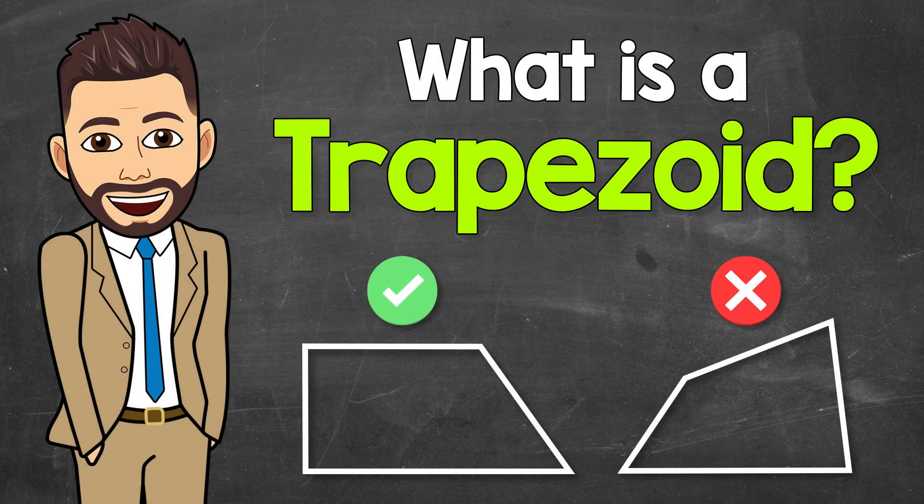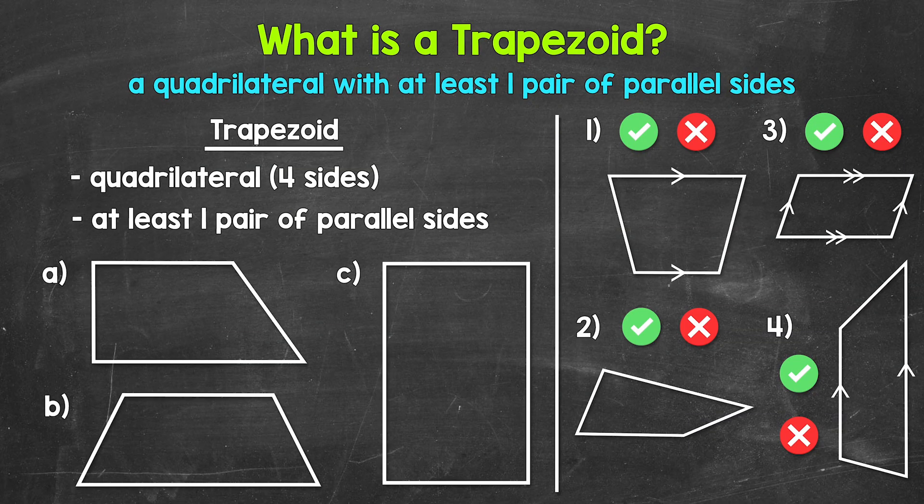Welcome to Math with Mr. J. In this video, I'm going to cover what a trapezoid is. Simply put, a trapezoid is a quadrilateral with at least one pair of parallel sides. Let's take a look at some examples and dive in a little further.